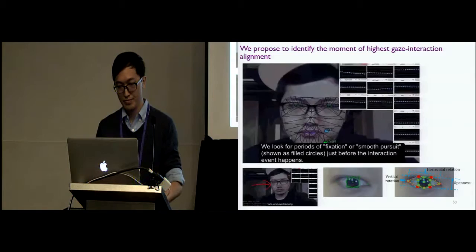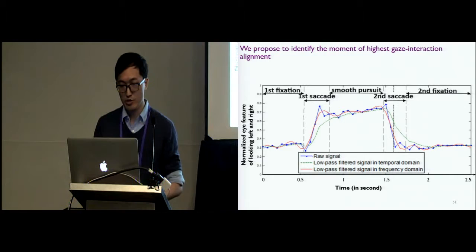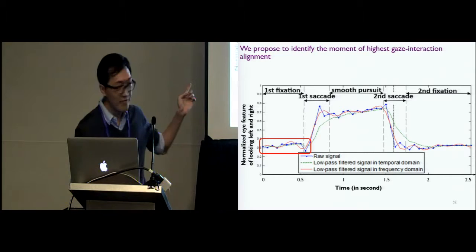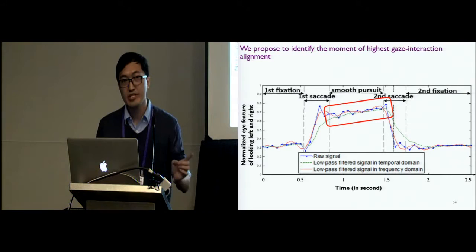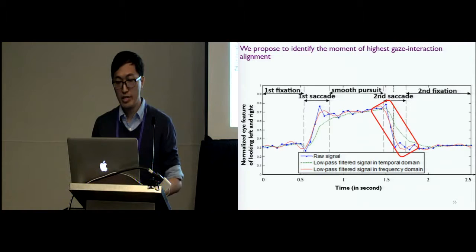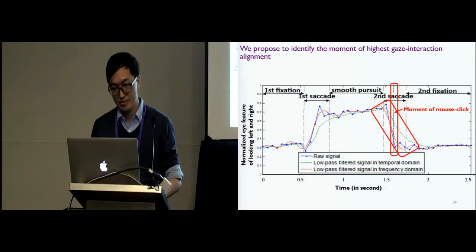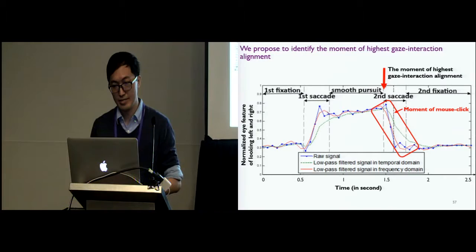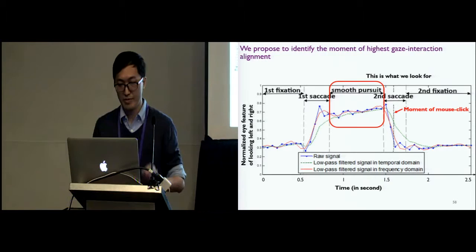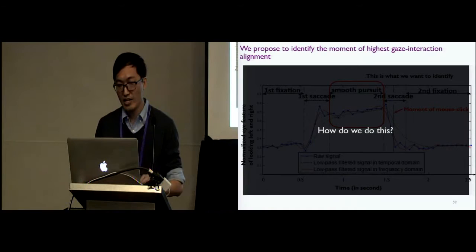This is an example. The x-axis shows the time. The y-axis shows the eye position. As time goes on, we see there is one fixation, one saccade to another location. Then there is a smooth pursuit when the user is probably reading a line, followed by another saccade. And this is when the mouse event happens. And this is the moment of the highest gaze and interaction alignment. Therefore, this is what we want to identify: the period of the smooth pursuit in this case. And we need to do this automatically and from the webcam images.